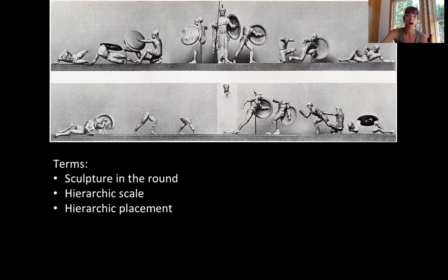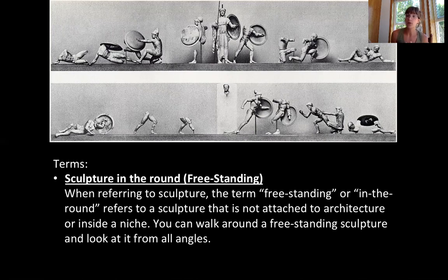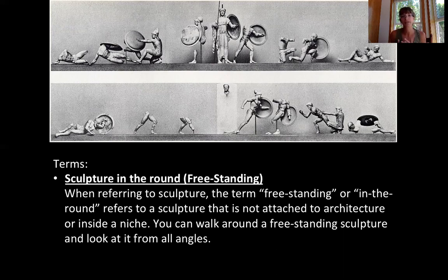A couple of key terms before we talk about these sculptures. Sculpture in the round — also known as freestanding sculpture — refers to sculptures that are not attached to architecture or within a niche architectural space. You can walk around these sculptures; they are freestanding, only attached basically at the feet. You can look at them from all angles. There can be sculpture that is attached to something, or sculpture that exists in the round, freestanding, like you see here.